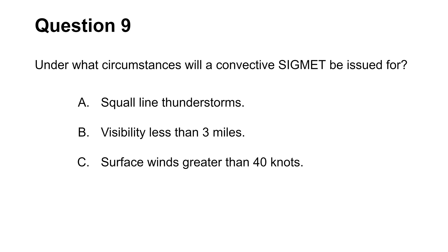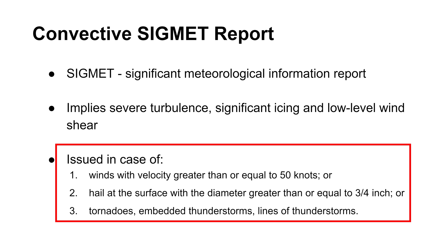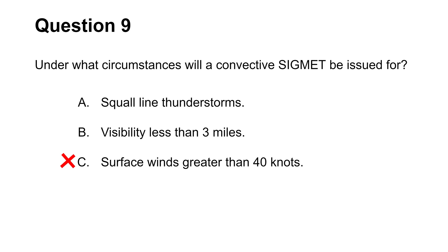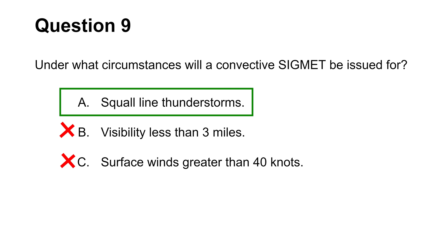The ninth question wants you to identify circumstances under which convective SIGMET reports are issued. There are three major circumstances that result in a SIGMET. Wind velocity must be above 50 knots, so this rules out choice C. Choice B is incorrect because reduced visibility does not give rise to the issuance of a SIGMET report. This leaves choice A as the answer, because squall lines of thunderstorms are one of the reasons for a SIGMET.